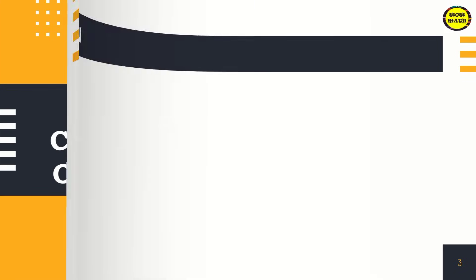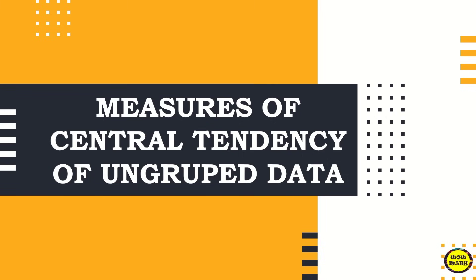What is a measure of central tendency? It is a summary measure that describes a whole set of data with a single quantity that represents the middle or center of its distribution, the way in which group of data clusters around a central value. In short, this measure tells where the center of a data set is located. The most commonly used measures of central tendency are the mean, median, and mode.